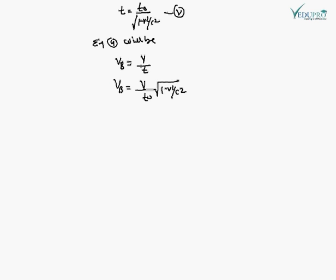Linear momentum के साथ, M_A V_A is equal to M_B V_B. M_A V_A की value हमने पहले निकाली, V_A is equal to — equation 1 से — Y upon T0. M_B